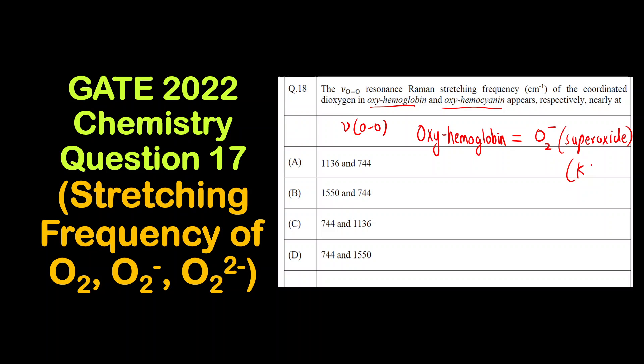Just like in KO2, this is an example of potassium superoxide: K+ O2-. So superoxide is present in oxyhemoglobin, and in oxyhemocyanin you have to remember it is O2²-, which is peroxide.